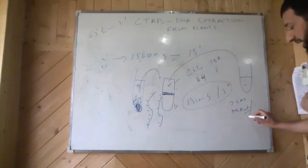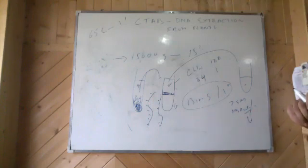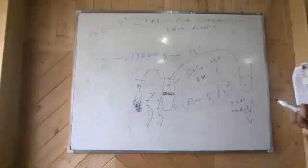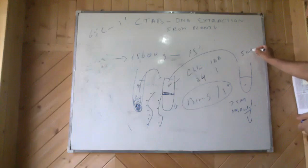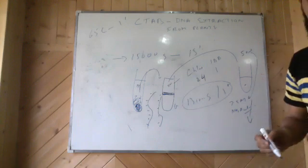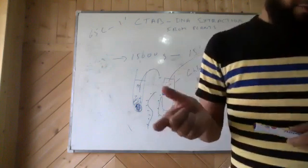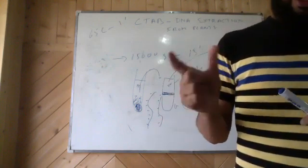When we add ammonium acetate, we also chill it on ice for a while. So we have to add around 50 microliters of ammonium acetate, not much. So after you have added it, put it on ice.